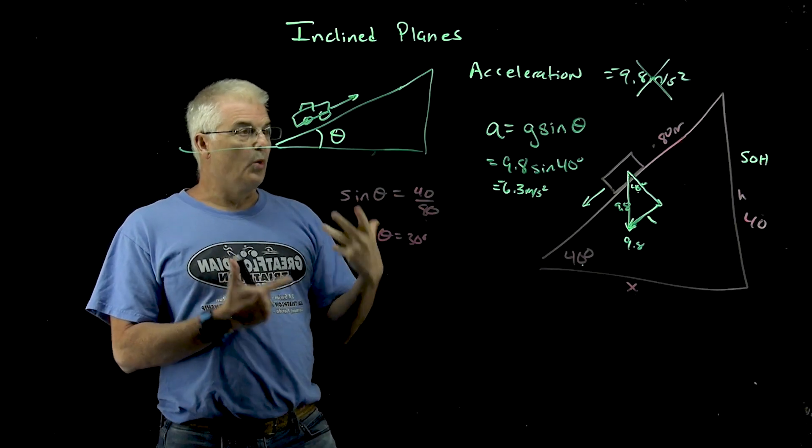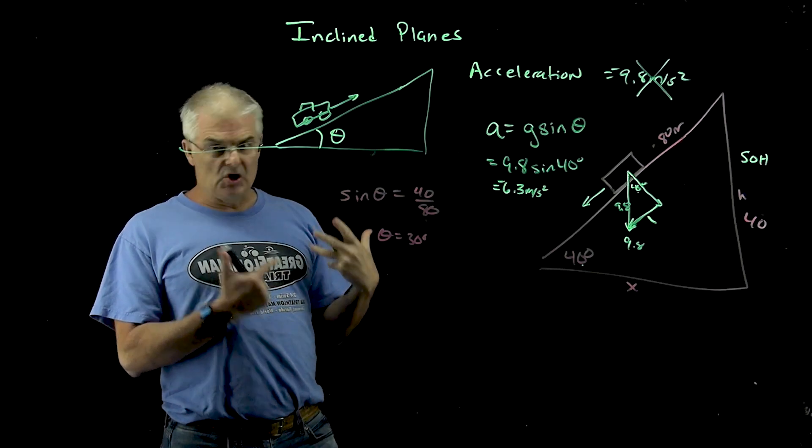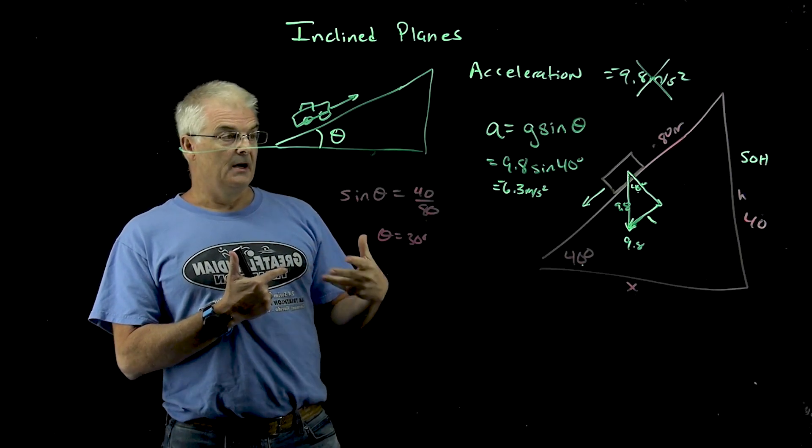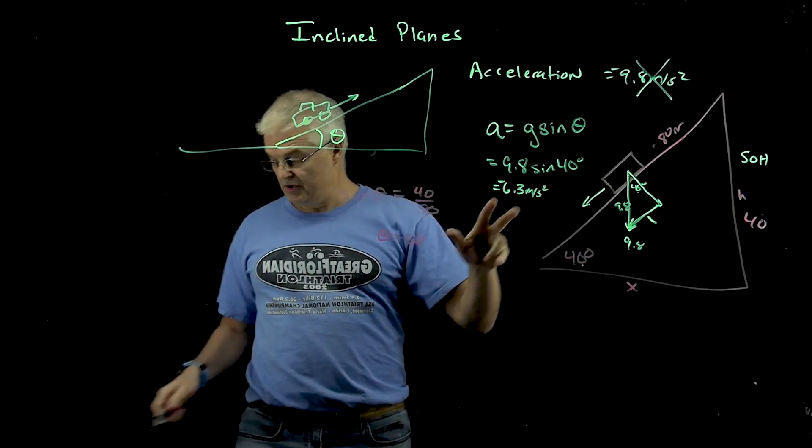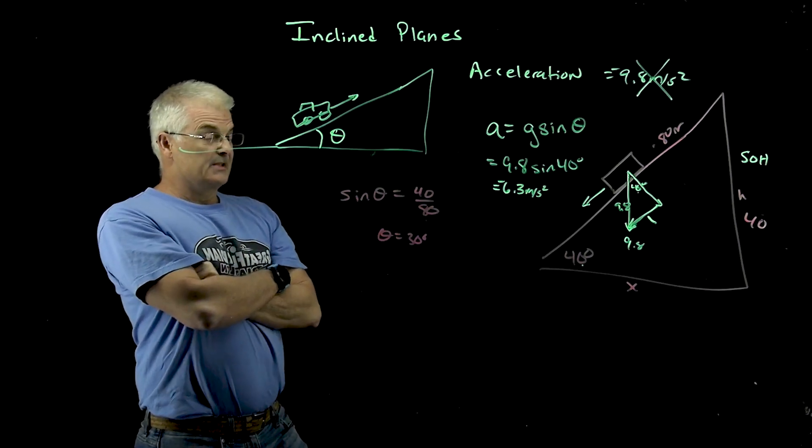So once you've done inclined planes... Inclined planes sound horrible, but the only thing that changes in an inclined plane is the acceleration. And it's going to be some number less than the g on the planet you're on. On the Earth, it's going to be something less than 9.8.